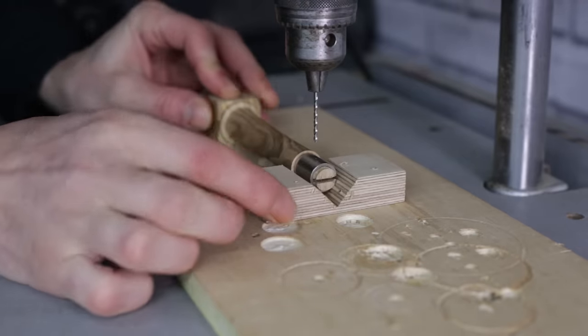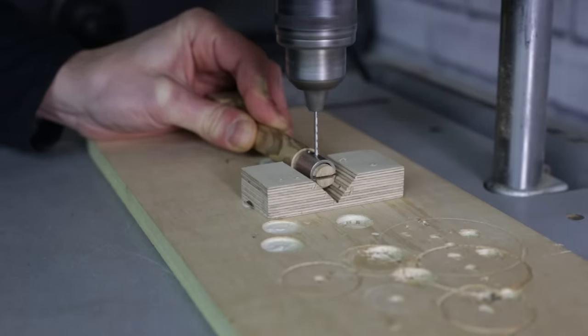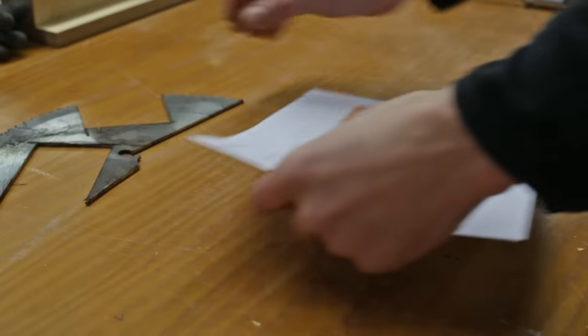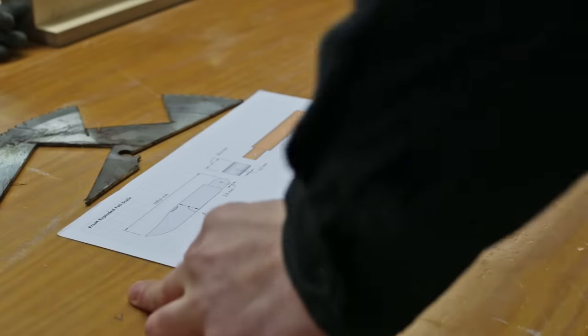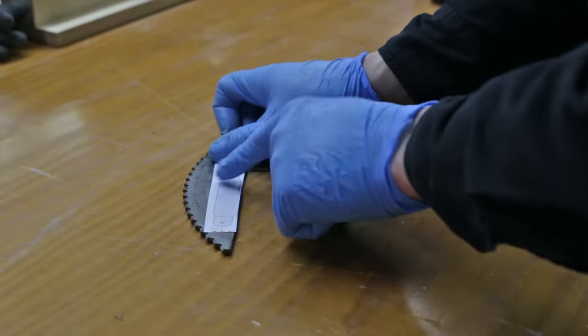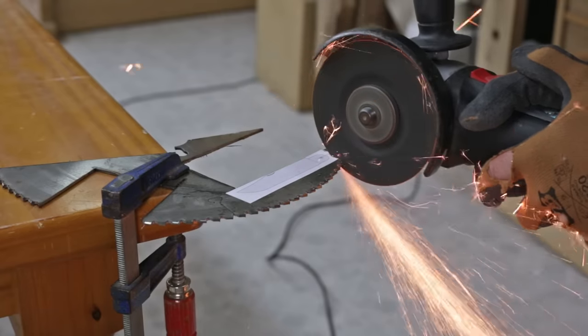Now it's time to drill a hole for the pivot. I've prepared this template that will help me do the job. Now I'll cut the blade of this old HSS steel disc. I'll use an angle grinder.